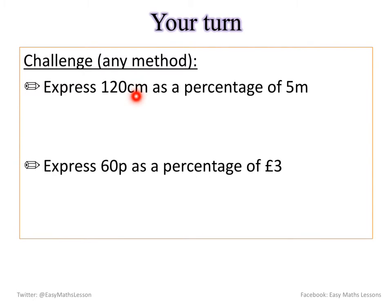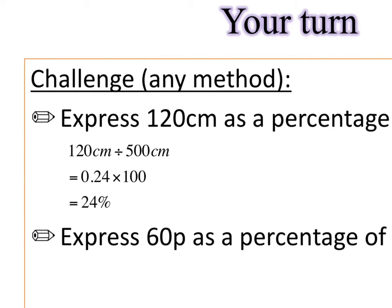Here's the catch. This unit here is in centimetres. This unit here is in metres and in order for you to do the calculation both must be the same units. So you need to do a conversion first. I decided to change my 5 metres into 500 centimetres and therefore 120 divided by 500, 0.24 times 100 which is 24%.